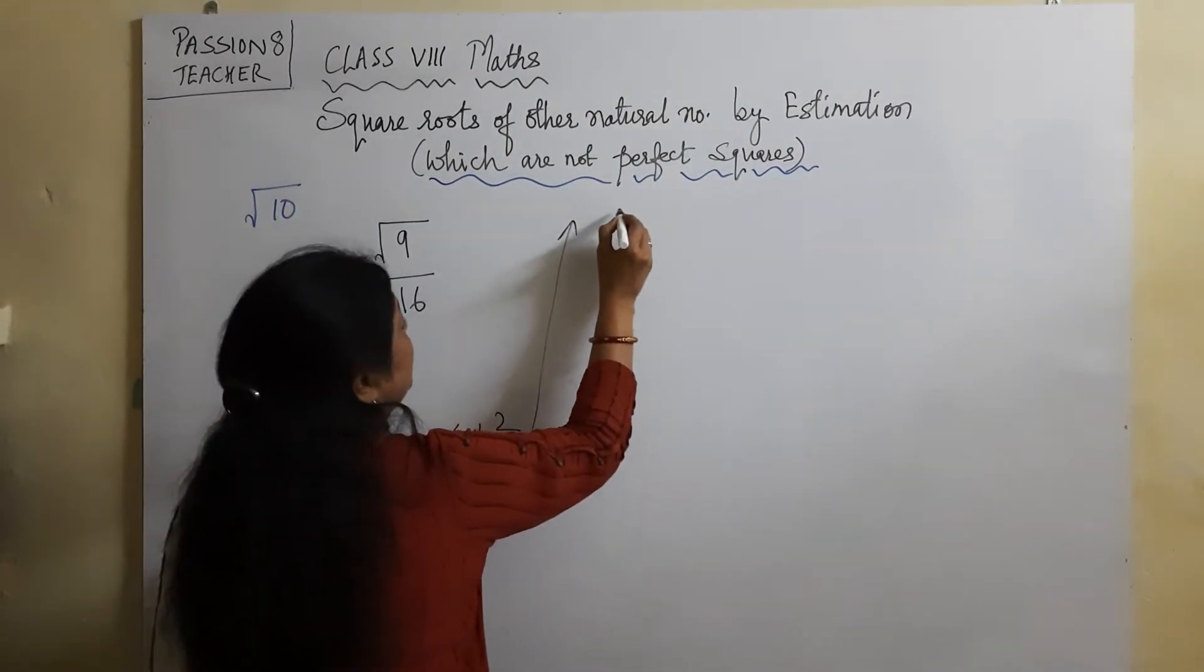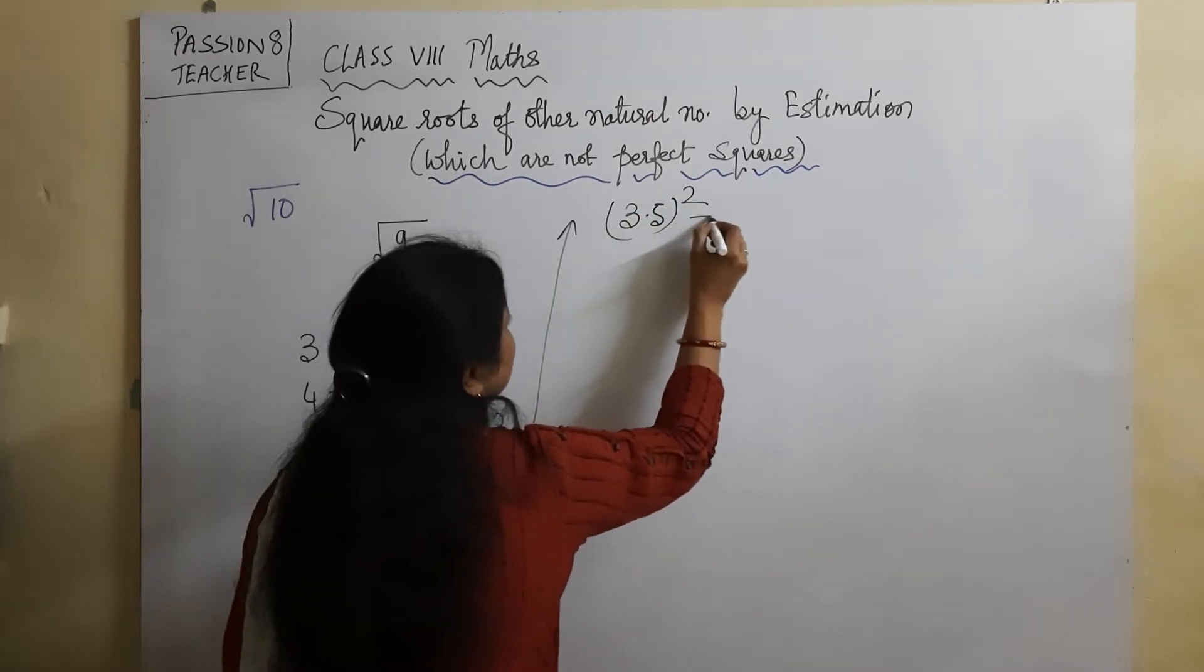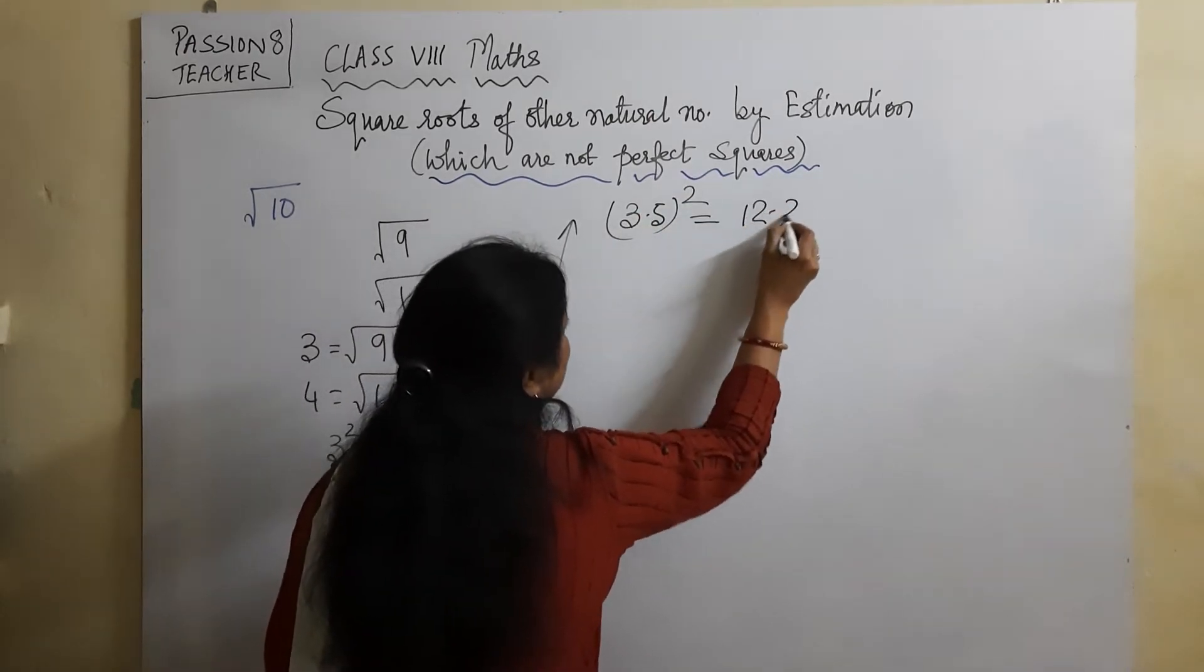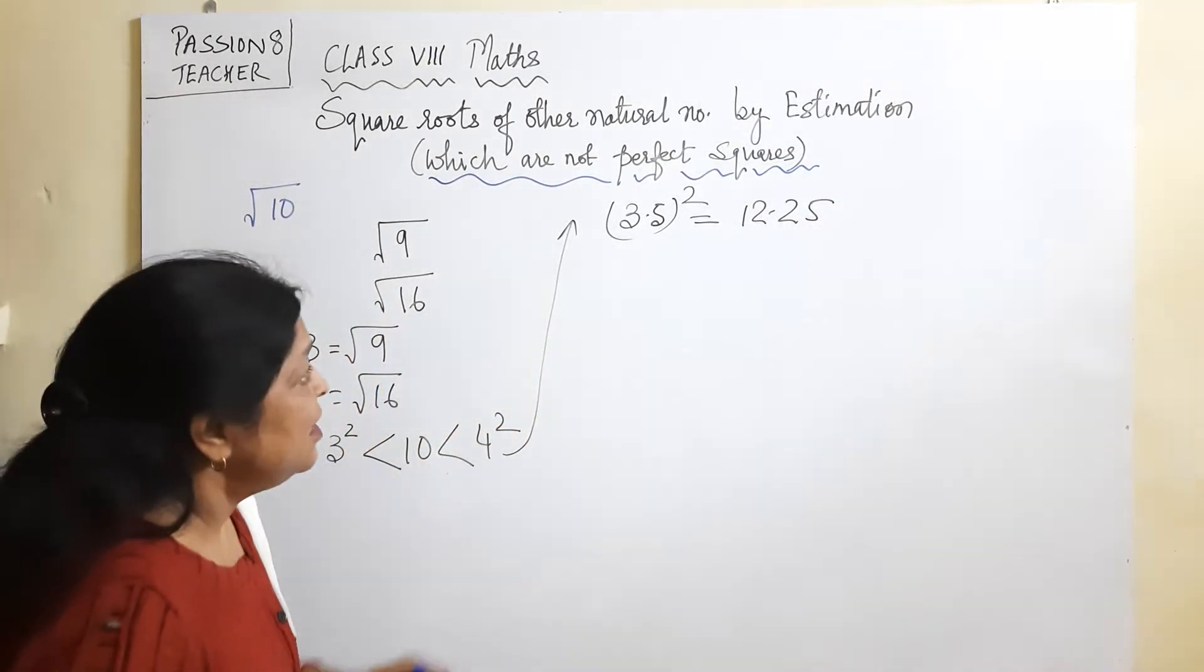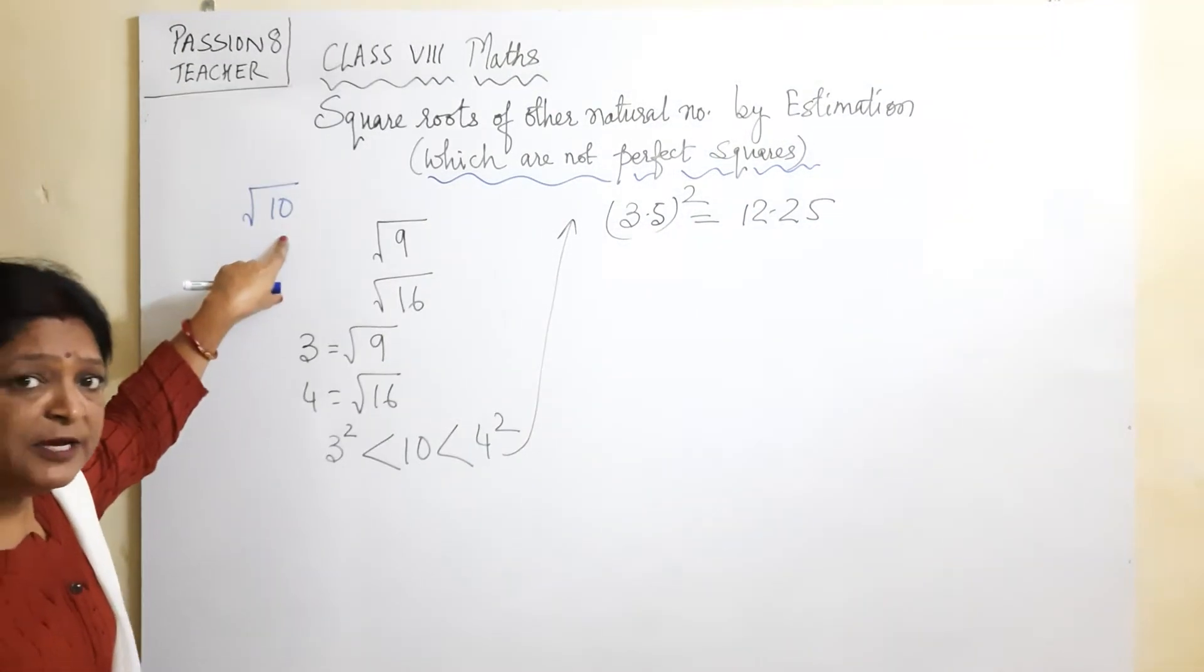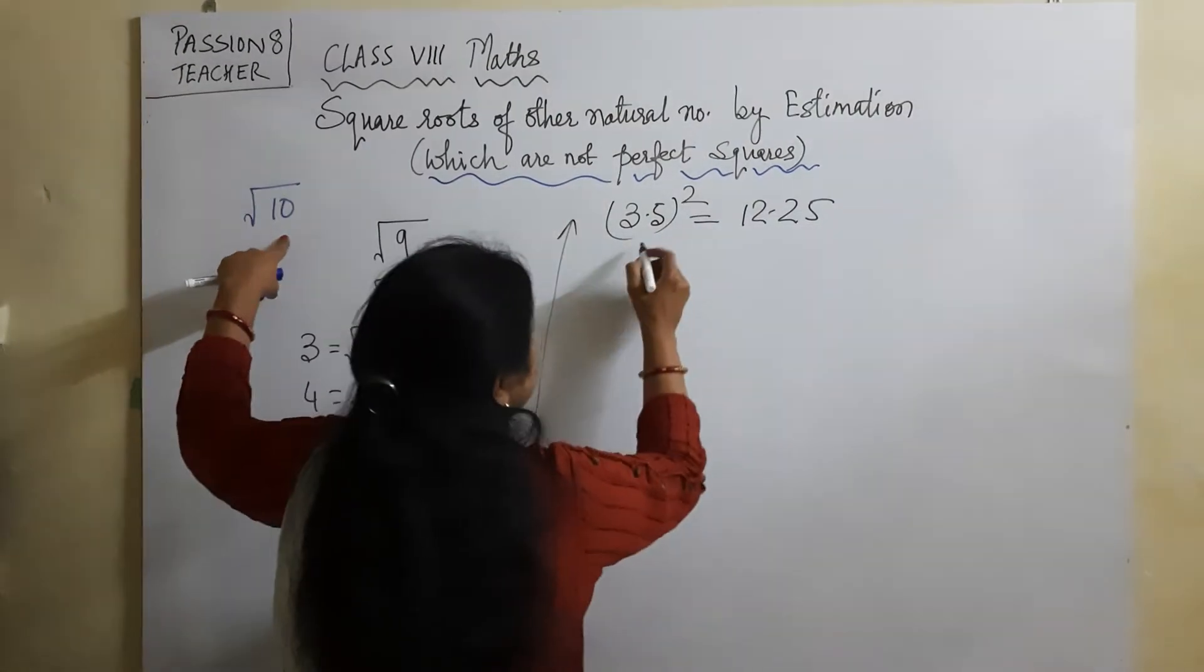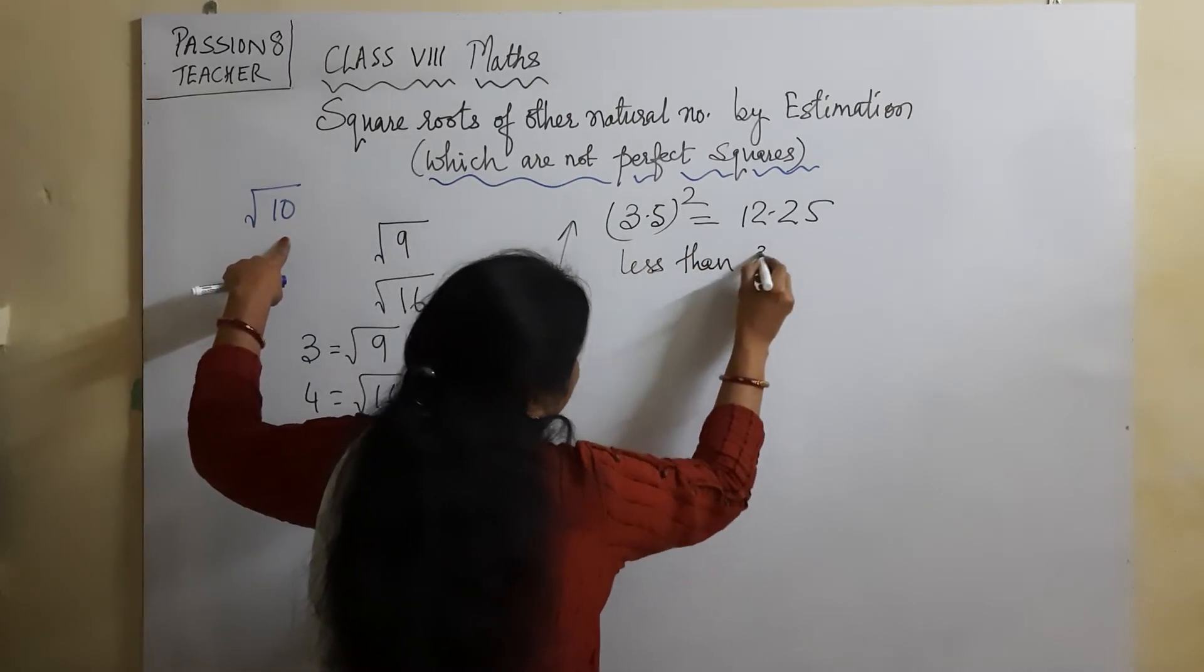So we take a number between 3 and 4, like 3.5. We take 3.5 square, which is 12.25. You multiply this to find out. So 12.25 is bigger than 10. Is it bigger than 10? It is less than 3.5.